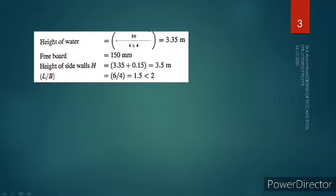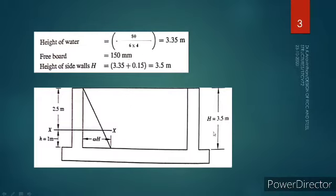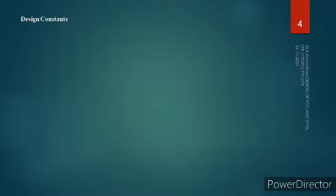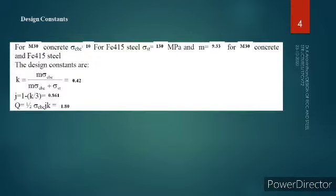We require 3.35 meter of height. Adding a freeboard of 150 mm, we get 3.35 plus 0.15 equals 3.5 meter. This is the exact overall height of the water tank required to hold this water. In order to design using the working stress method, we need the design constants K, J, and Q.